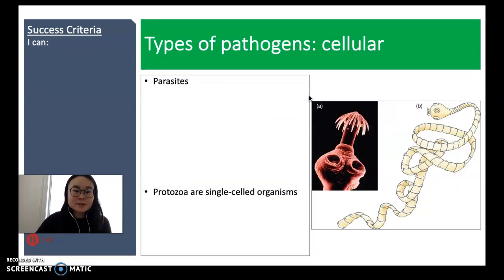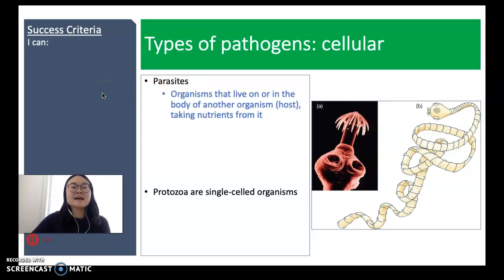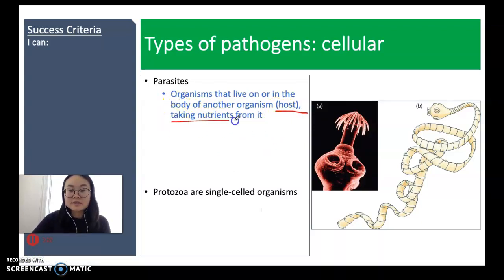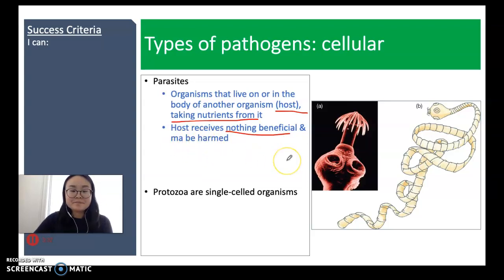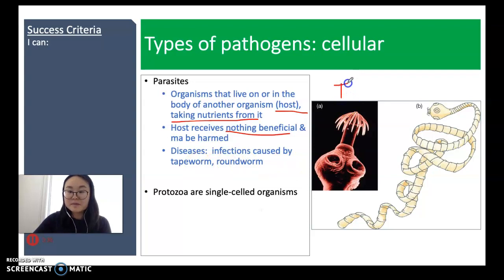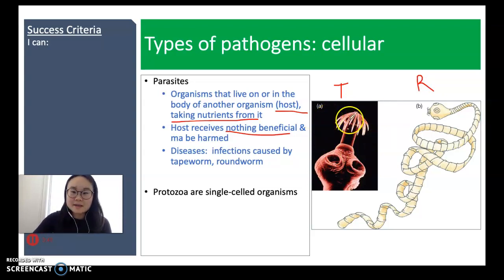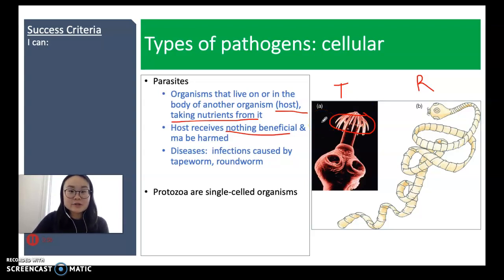There are two more types of living pathogens. The first is a parasite. A parasite is an organism that lives on or in the body of another organism, called the host. The parasite takes nutrients from the host, but the host receives nothing beneficial in return and may be harmed. Some diseases caused by parasites include infections caused by tapeworms or roundworms. Tapeworms infect your digestive tract, using small arms to bury into the gut lining, taking nutrients while the host receives nothing in return and may develop disease.